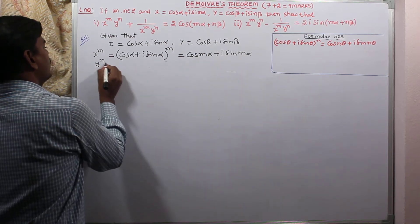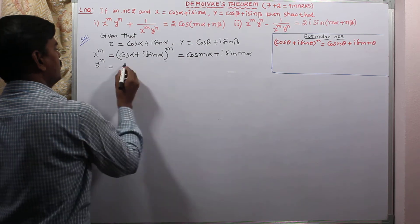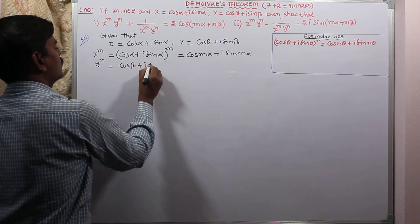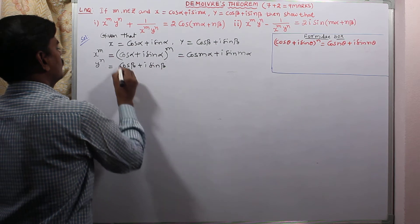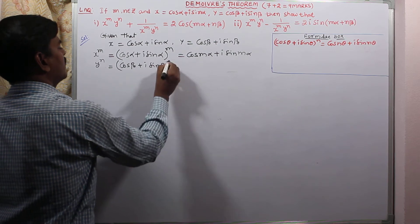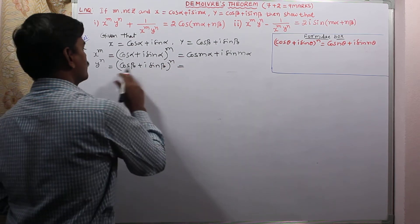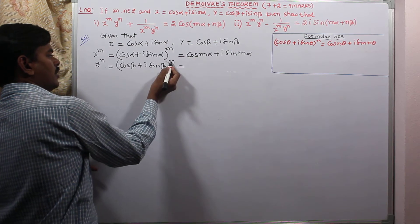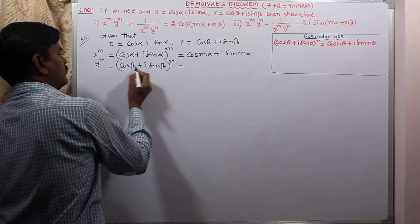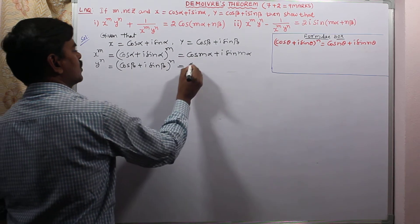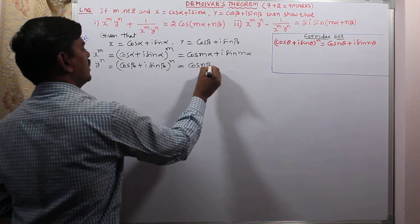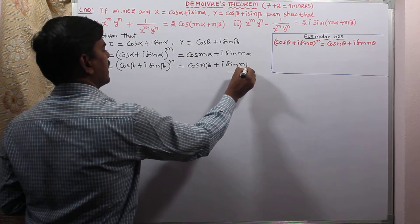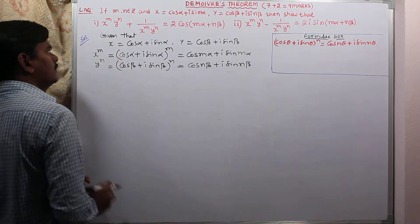Similarly, we find y^n. According to De Moivre's theorem, (cos θ + i sin θ)^n, the power is multiplied to the angle, giving cos(nβ) + i sin(nβ). So y^n = cos(nβ) + i sin(nβ).